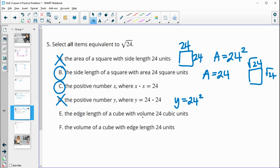The edge of a cube with volume 24. No, that's going to be cube root. So this would be cube root of 24, not square root, because you'd have the same number times itself three times.